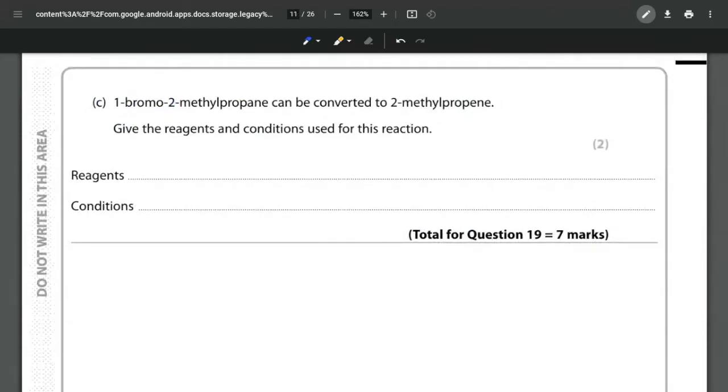For part C in this nice short question only seven marks, we want to convert 1-bromo-2-methylpropane into 2-methylpropene. Going from the bromo-alkane this time into an alkene, we want to give the reagents and the conditions. This reaction is not a nucleophilic substitution reaction, this is an elimination.